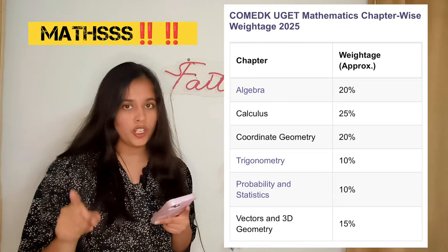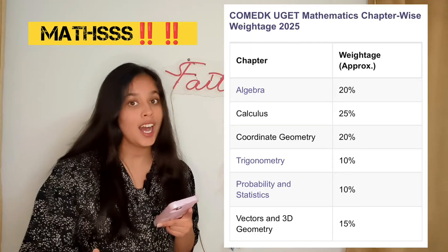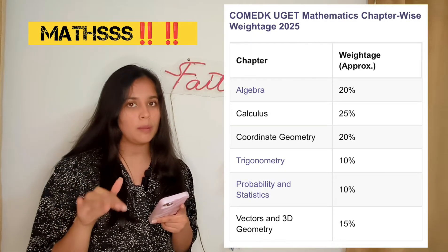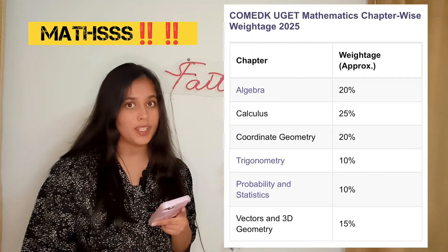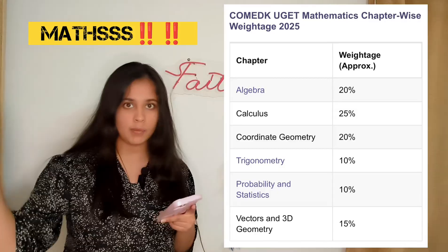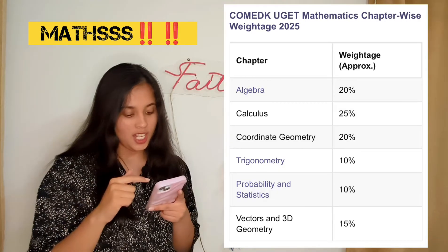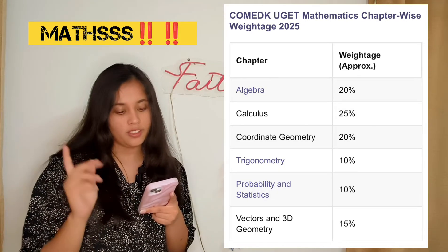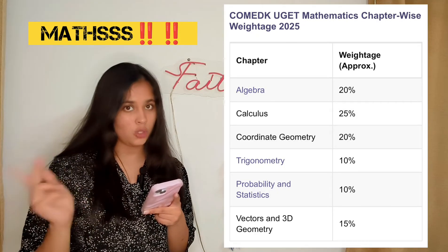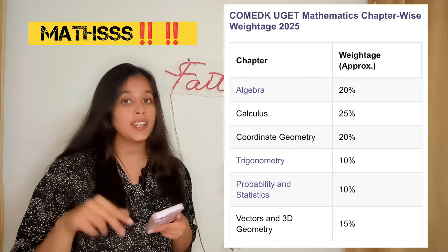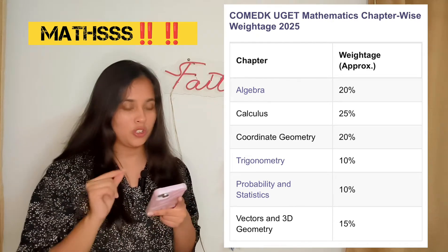Let's go to trigonometry. This is hard, so even if you don't have time you can skip it, but try to cover whatever was mentioned before this. If you do study it, focus on trigonometric ratios and identities and heights and distances questions.